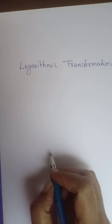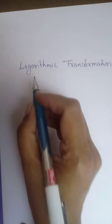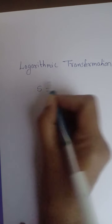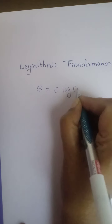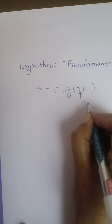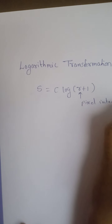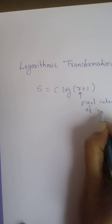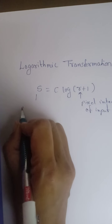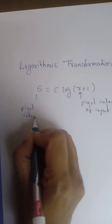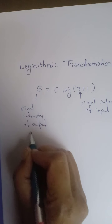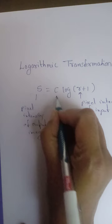Now let us learn the logarithmic transformation of an image. The formula for logarithmic transformation is s = c * log(r + 1), where r represents the pixel intensity of the input image, s represents the pixel intensity of the output image, and c is a constant.